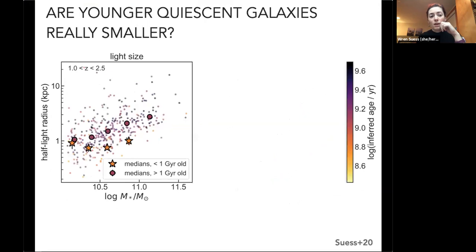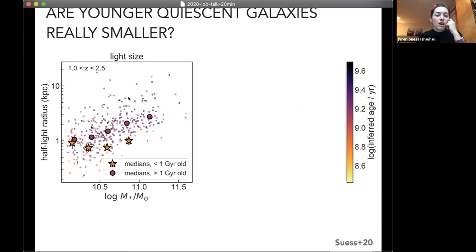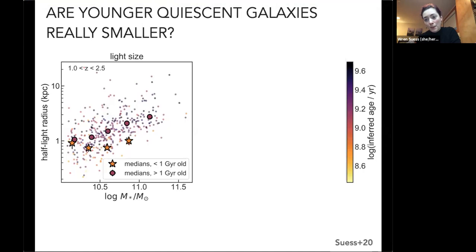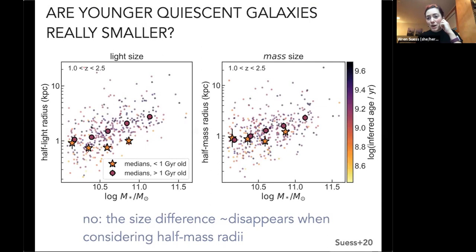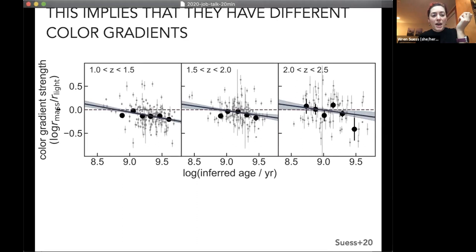Looking at half-light radii, I see individual points colored by inferred age, with median bins for the old and young quiescent populations. We again see a gap in sizes as a function of age where the younger quiescent galaxies look smaller. But when I plot the half-mass radii of these galaxies, that size difference mostly disappears. Post-starburst galaxies are not actually significantly smaller at fixed mass than their older quiescent counterparts. The difference between light and mass sizes implies the two populations have differences in the strengths of their color gradients.